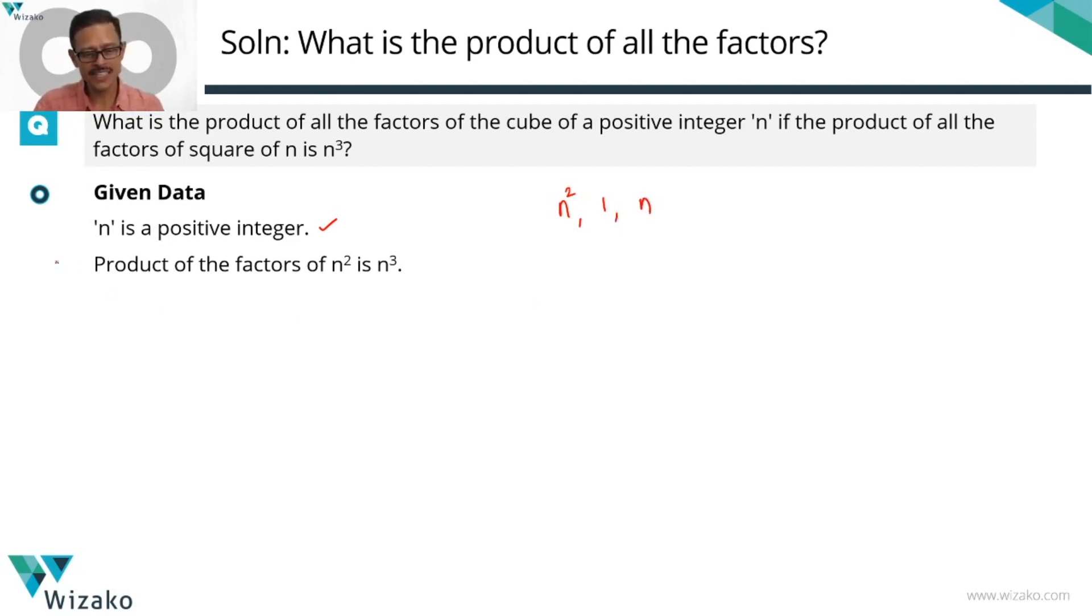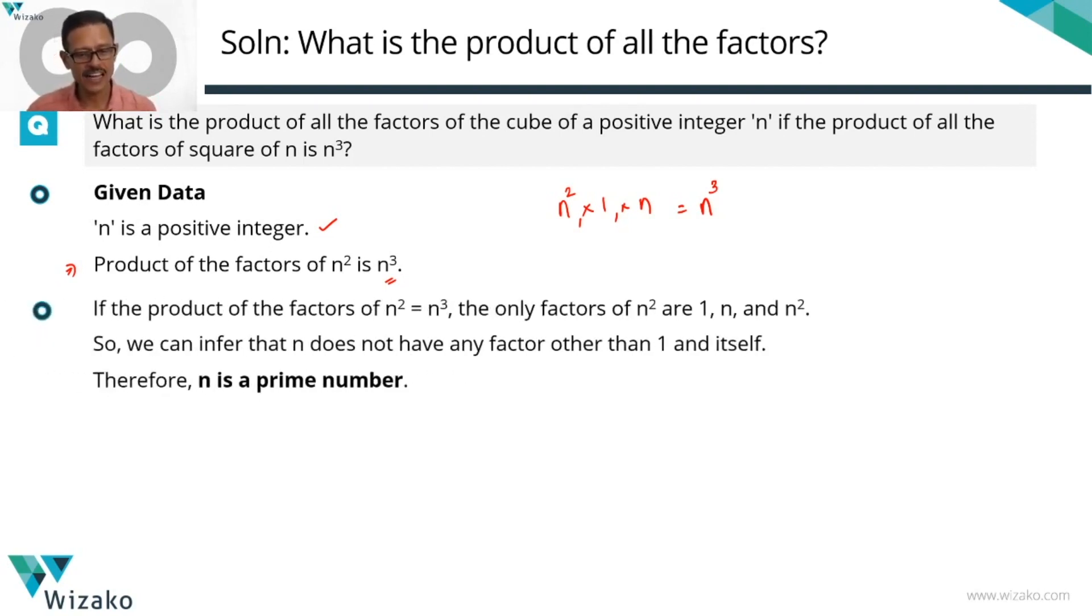Now look at it. The second data tells us that the product of the factors of n square is n cube. Now let's multiply these three numbers and check out what we get. n square times 1 times n is actually equal to n cube. So what can we infer from this? The only factors of n square are 1, n and n square. These are the only factors of this number. Now what can we infer about n from this?